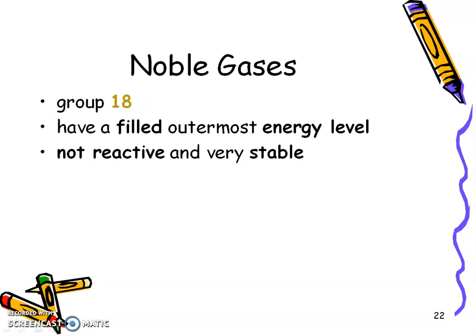The noble gas is your last group 18. And of course, they have a filled outer energy level, so they're stable. And we want to remember that with the noble gases, they all have eight valence electrons, except for helium. Helium only has two.